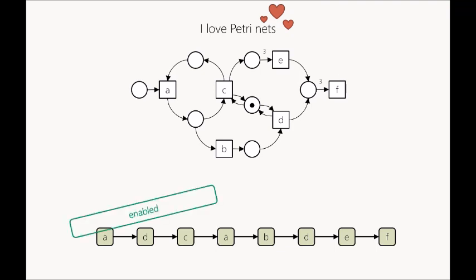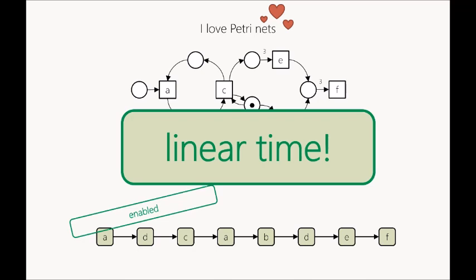We call the firing sequence enabled. If you have a Petri net and the input to your algorithm is a firing sequence and you want to know if the sequence is enabled, you just execute the sequence from the initial marking and check. This algorithm runs in linear time. But if you really think firing sequences are a cool way to model behavior, you'd better stick to state machines.